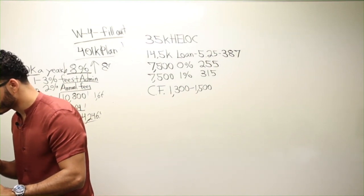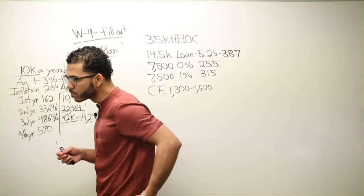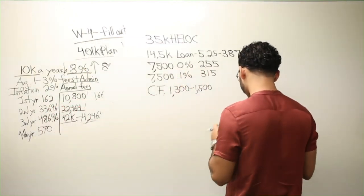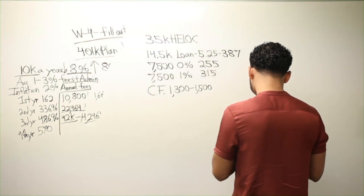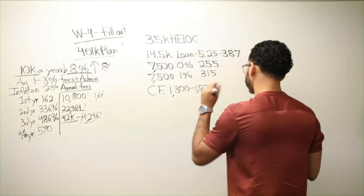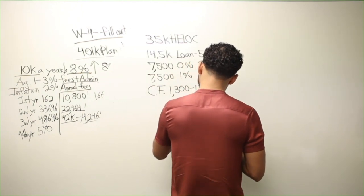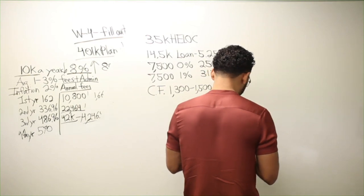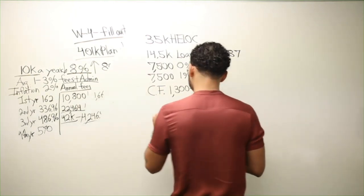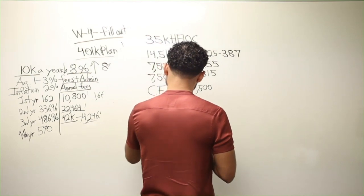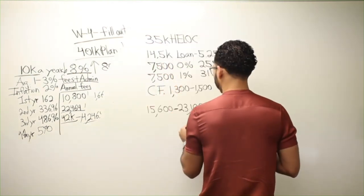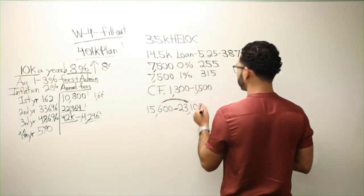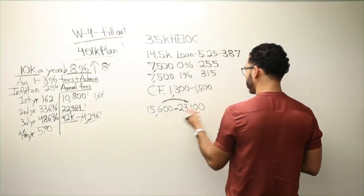So, when we, let's see, when we do 35k times 66%, $23,100. I'll use his lower cash flow number, $1,300 times 12 is $15,600. So, anywhere between $15,600 and $23,100 is my chunk.